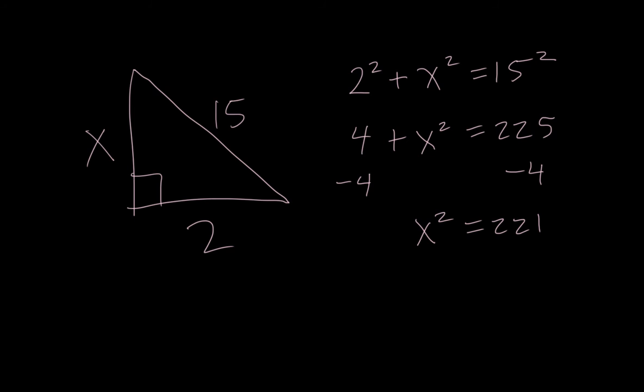And so we need to square root that. It's not a perfect square. So I can go 221 raised to the 0.5. Or I can go 2nd square root 221. We see both of those give us 14.9. So x is approximately 14.9.